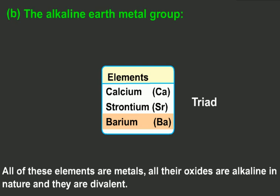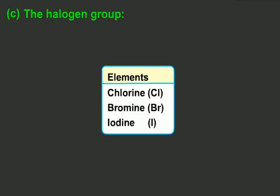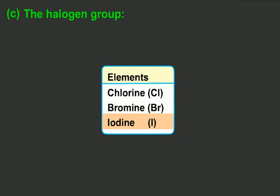The Halogen Group: The elements chlorine, bromine, and iodine have similar chemical properties and form a triad. These elements are non-metals. They react with water to form acids and they are monovalent.